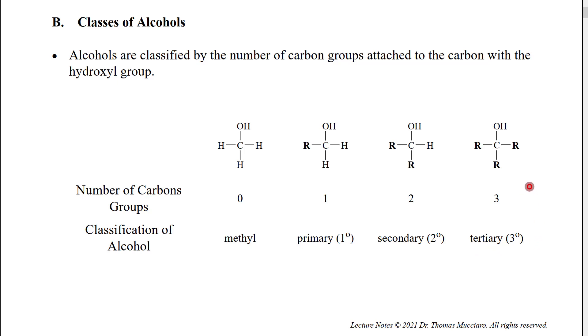I do want to point out that the carbon groups do not have to be identical, although I used the same symbol of R to represent our generic carbon group. The main significance of classifying alcohols is that we are going to see that certain reactions will behave differently with primary alcohols as compared to secondary alcohols. And in fact, some reactions will not work at all on tertiary alcohols.